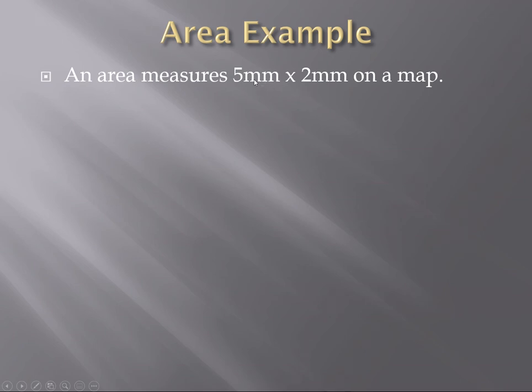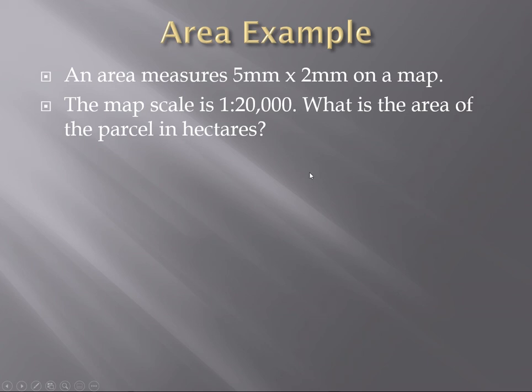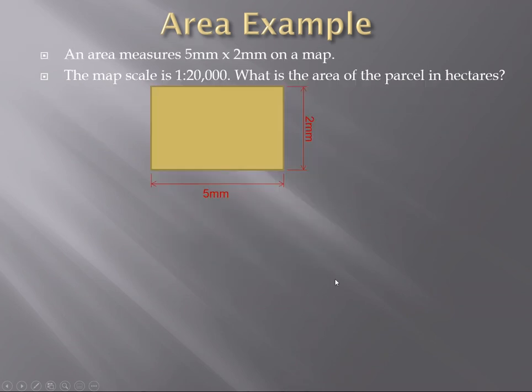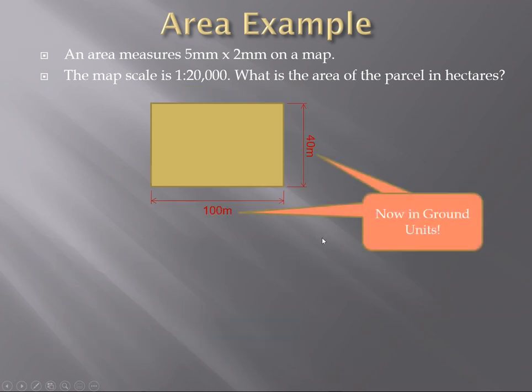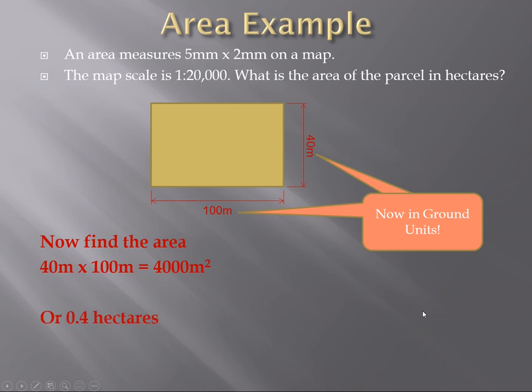So if an area of a rectangle measures five millimeters by two millimeters on the map, the map scale is 1 to 20,000. What is the area of the parcel in hectares? Well, we have two millimeters by five millimeters. We're going to convert it to ground units first. Don't do the math first, because it gets really confusing otherwise. So two millimeters is equal to 40 meters on the ground. Five millimeters on the map is equal to 100 meters on the ground. Now we have ground units. Now we can calculate the area. So now we have 4,000 meters squared in area, then we can convert it to hectares, which is 0.4 hectares.